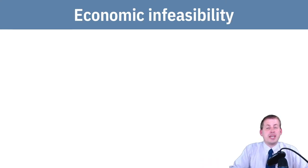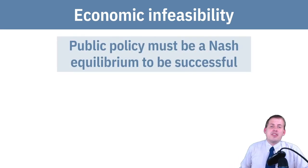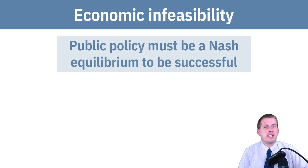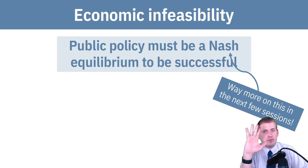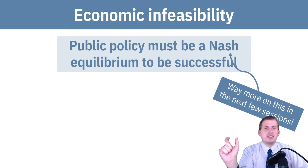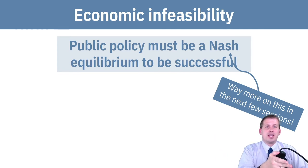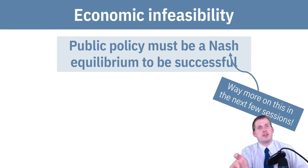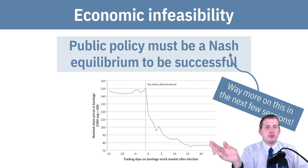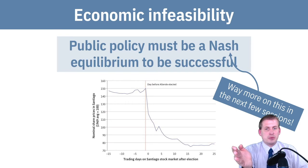From the economic infeasibility side, the idea is that any public policy you set has to be a Nash equilibrium to be successful — that's a term we'll cover in the next section. What this really means is: if you try to set a policy and people's natural inclination is not to follow it because the incentives are misaligned, people are going to ignore that policy and revert to whatever the most logical outcome is for them.